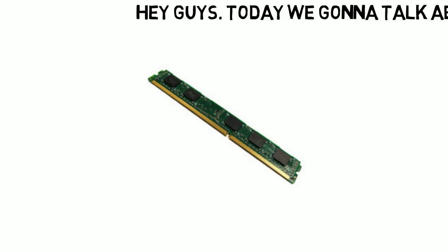So, first of all, what is Cache Memory? It's a special type of memory found in a computer microprocessor where it stores frequently used instructions or data.